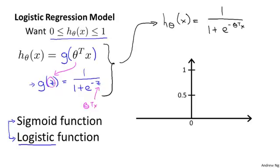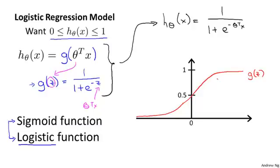Let me show you what the sigmoid function looks like. I'm going to plot it on this figure here. The sigmoid function g of z, also called the logistic function, looks like this: it starts off near zero, then it rises until it crosses 0.5 at the origin, and then it flattens out again. So that's what the sigmoid function looks like.